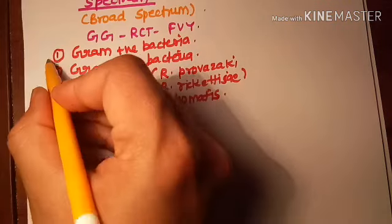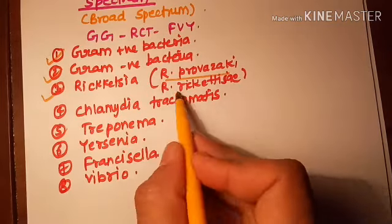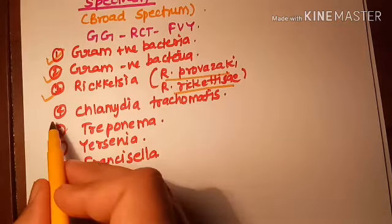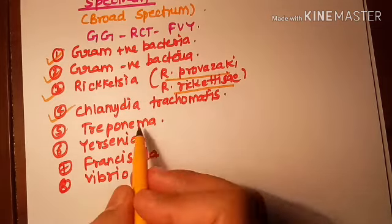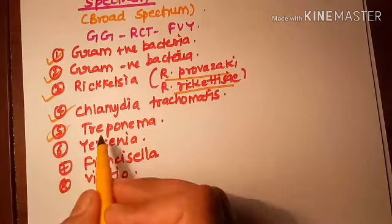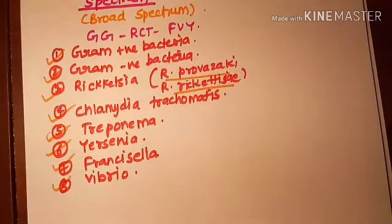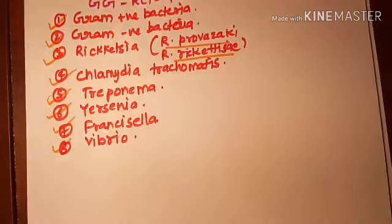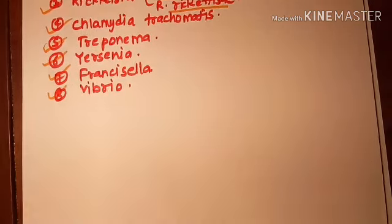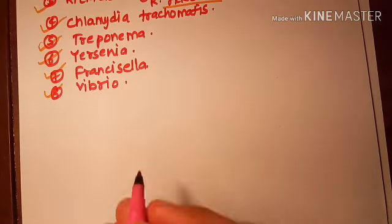So tetracyclines have a broad spectrum: they can be used against gram-positive, gram-negative, Rickettsia, Chlamydia trachomatis, Treponema, Yersinia, Francisella, and Vibrio cholerae.